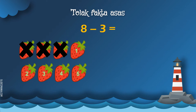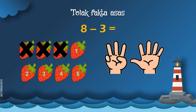Sekarang Cikgu nak ajar pula gunakan jari. Keluarkan 8 jari. Sekarang tutupkan 3 jari — 1, 2, 3. Kita kira berapa lagi jari yang tinggal: 1, 2, 3, 4, 5. Jadi nampak tak bilangan stroberi dengan jari yang tinggal? Sama, iaitu 8 tolak 3 sama dengan 5.